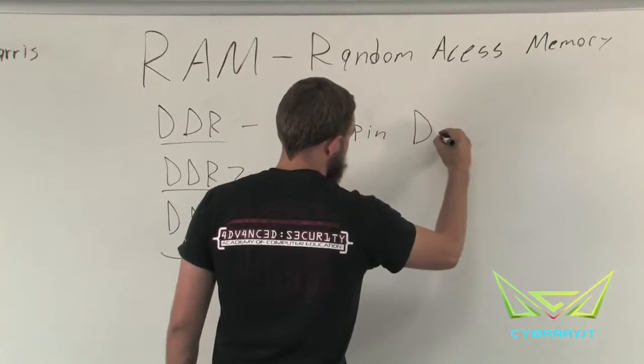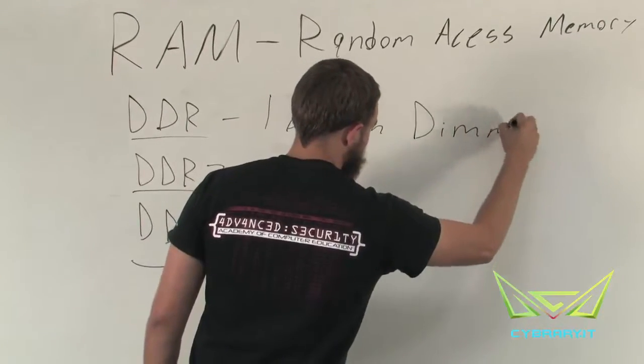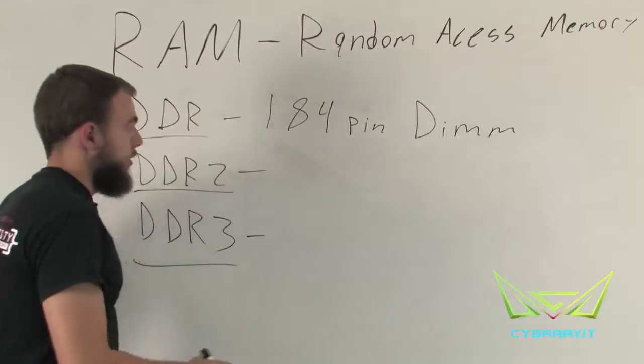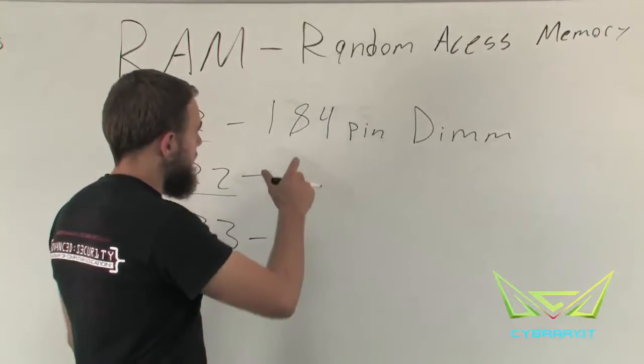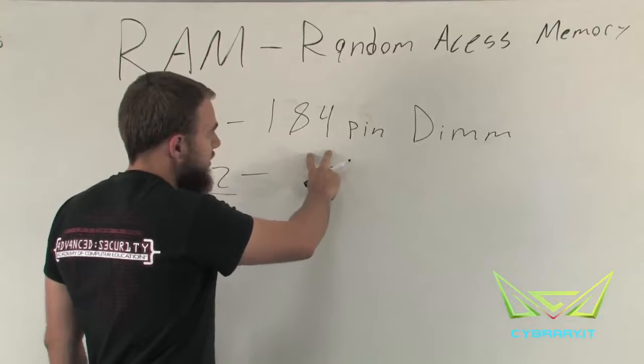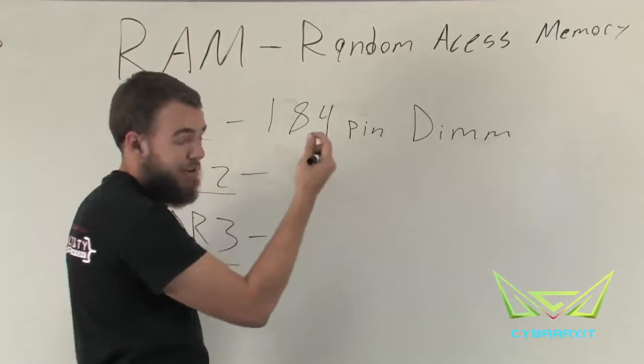DDR-SDRAM is a 184-pin DIMM RAM. So, similar to the module that we showed a second ago, there are 184 pins, and then the key, the notch in the memory, is in a certain place.